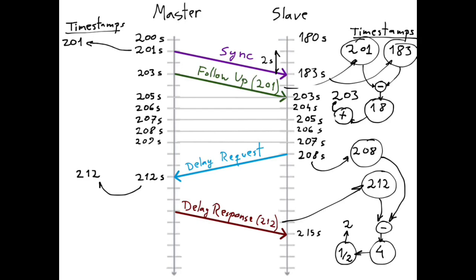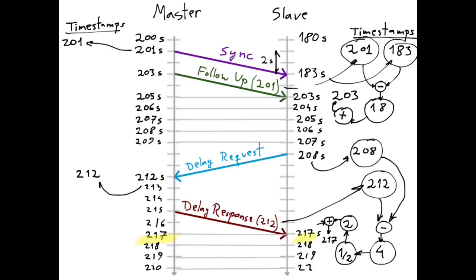Now, all that remains to be done is for the slave to correct its clock value with this propagation delay. It therefore takes its current clock value and the calculated propagation delay and adds those two values together to get the new corrected clock value, which in this example has a value of 217. This value is the final corrected value for the clock of the slave, and now the slave is perfectly synchronized with the master. They will remain so until their clocks happen to drift apart, which will inevitably occur and is therefore the reason why PTP performs periodic resynchronizations. This is then the basic idea of how synchronization works between a master and a slave in PTP. In reality, there are a few more details, such as avoiding the slave clock from suddenly jumping forward or backwards as a result of a resynchronization.